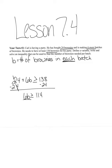And so now to solve here, I'm going to divide by 6 on both sides. So 114 divided by 6 is 19. So what this means here is that b is greater than or equal to 19. So to answer this question, Carl needs to make sure that he has 19 or more brownies in each batch in order for him to have the minimum number of brownies for his party, which is 138.